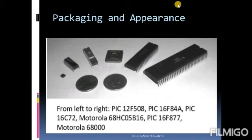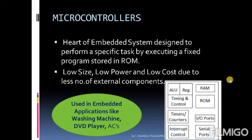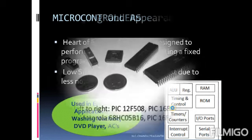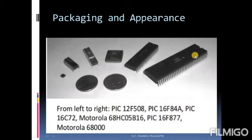Microcontrollers are available in the form of an IC, specifically in a dual in-line package structure, also called the DIP structure IC. All components — timers, IO ports, serial ports — are embedded in a single integrated circuit. These are the different types of microcontrollers available.